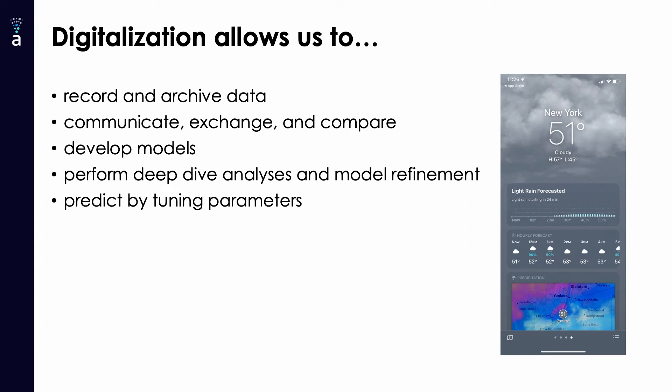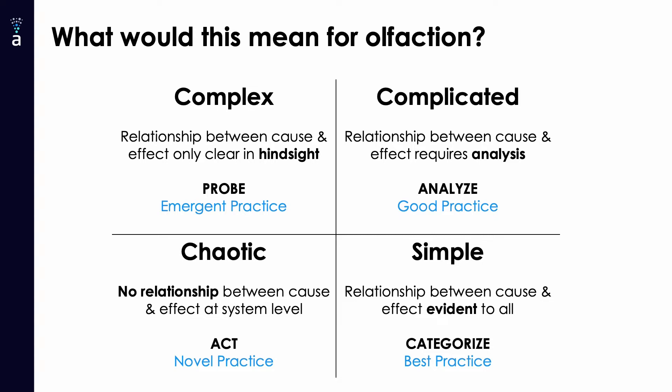So let's look at what this means for olfaction. Olfaction is complex — or complicated — at best. Human panels are complex: they provide insight on olfaction, but it's very difficult to establish a clear relationship between cause and effect. Conversely, GC analysis is more complicated: it allows you to analyze the constituents of a smell, but it's difficult to derive what the actual smell is just from GC results. So is digital olfaction a path from chaotic complexity to simplicity, where the relationship between cause and effect becomes more evident?